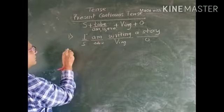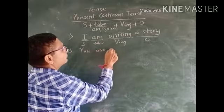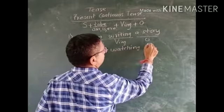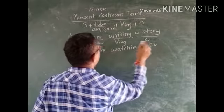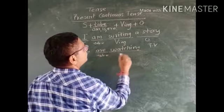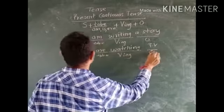This is first sentence. This is second. Now you are watching TV. This is subject, this is to be verb, this is verb in its ing form, this is object.